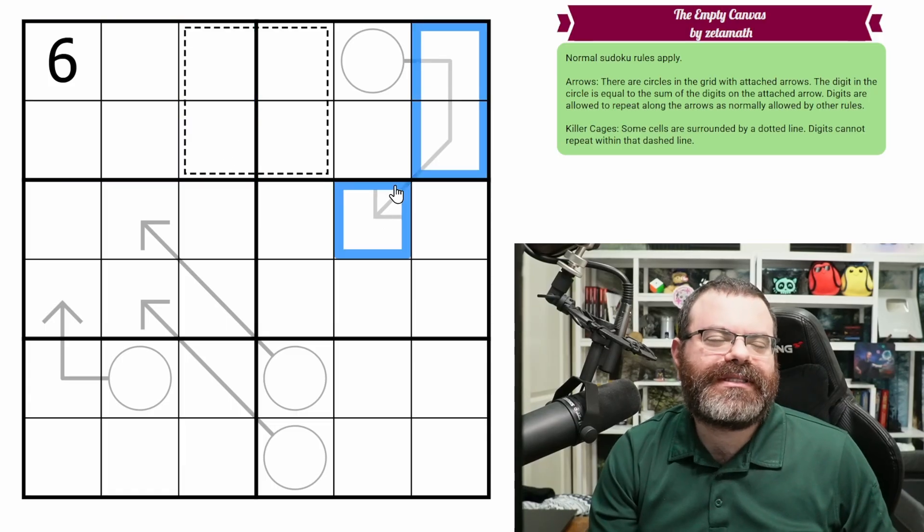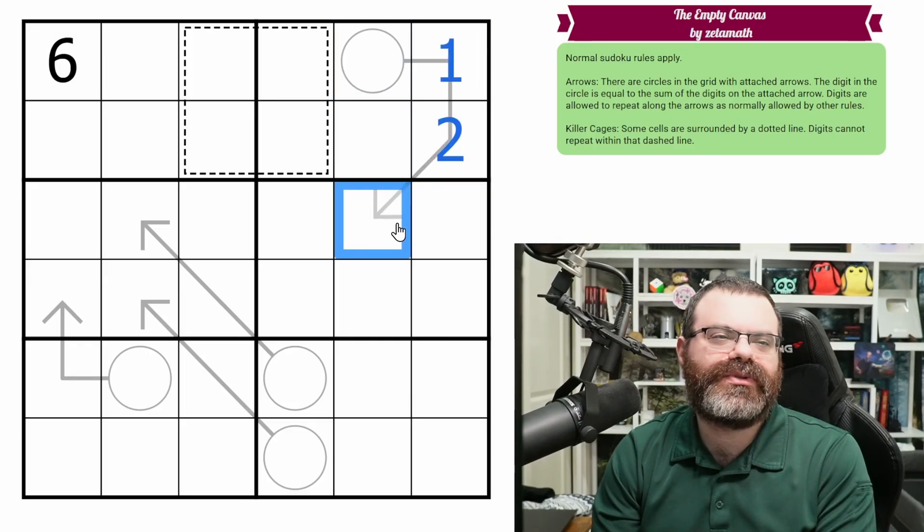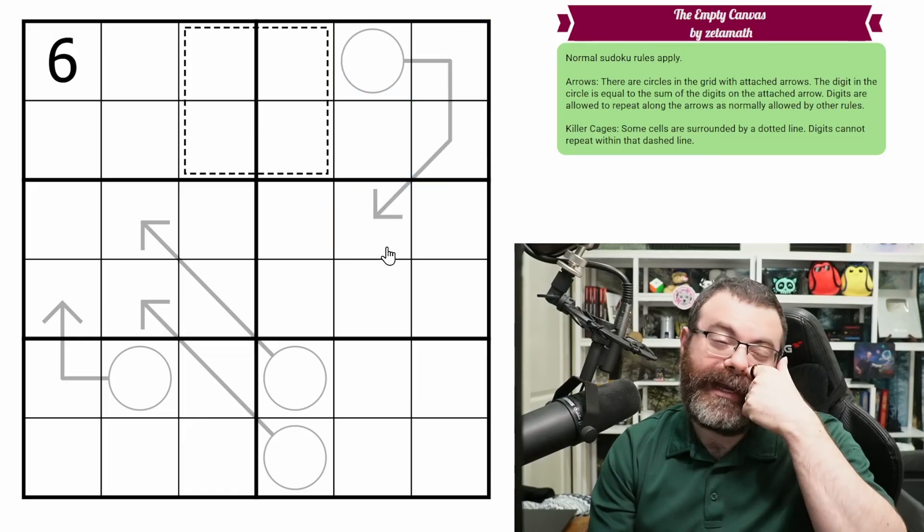We also have arrows in the grid. These arrows are attached to a circle. The digits on an arrow sum to the value in the circle. So if this was, say, 1 to 2, that would add to 5, and we put a 5 there.